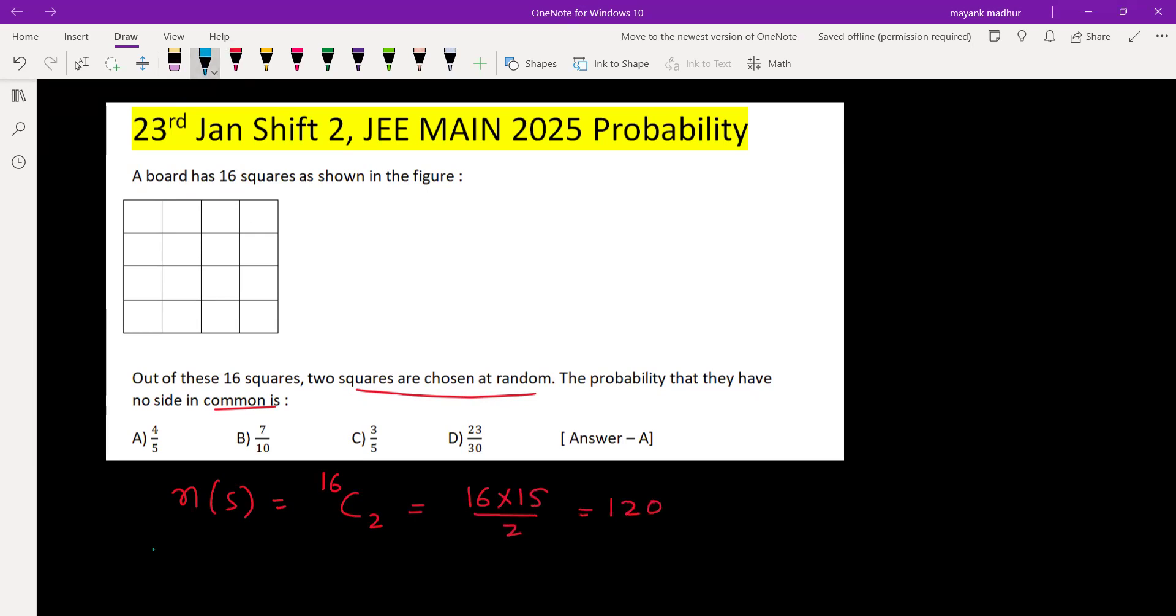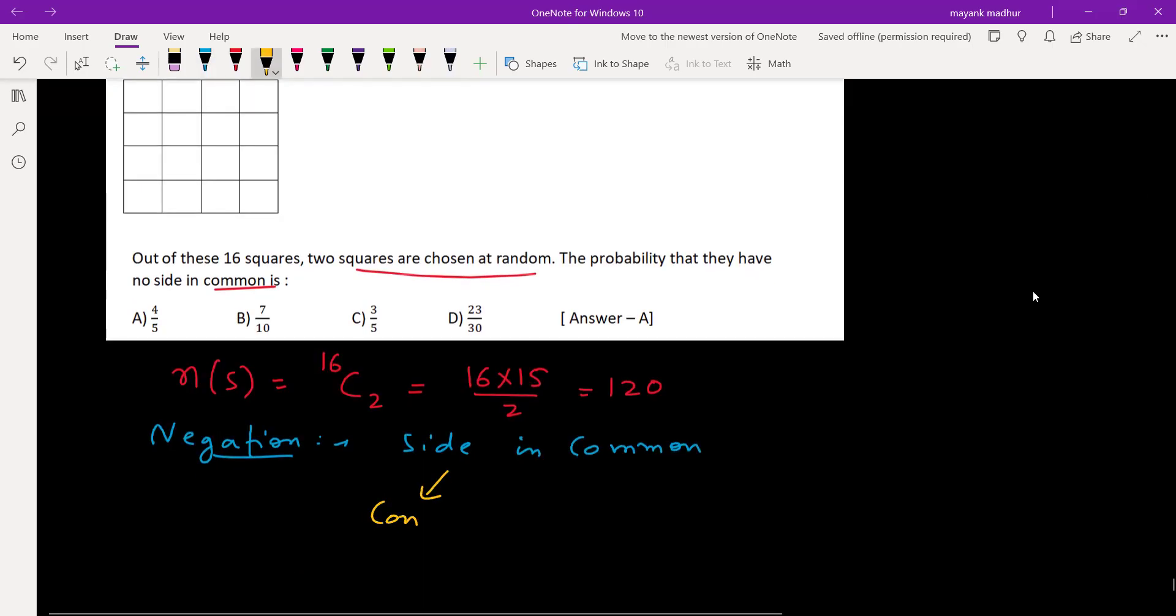Now we'll go for negation. Negation are those cases when we have two squares such that they have a side in common. For that to happen, we need two consecutive squares which are either in the same row or in the same column.